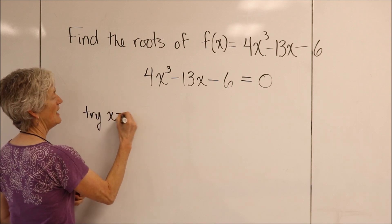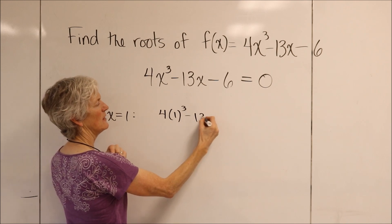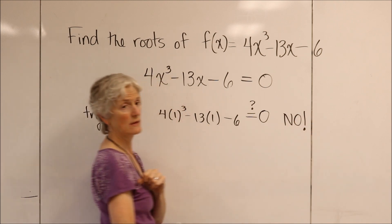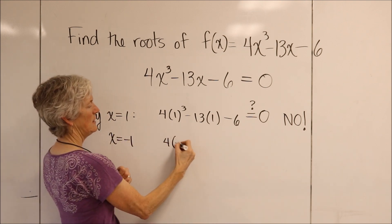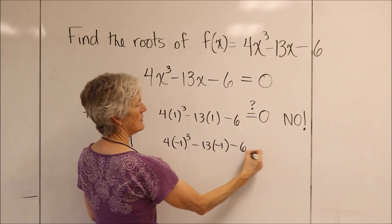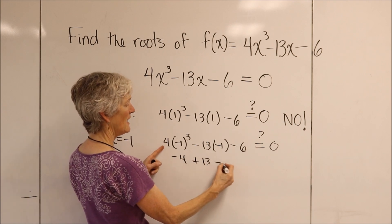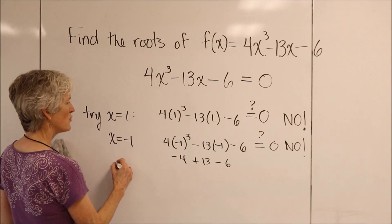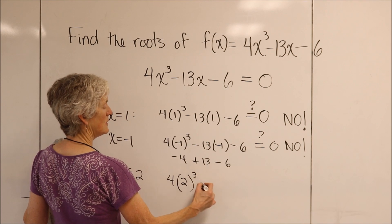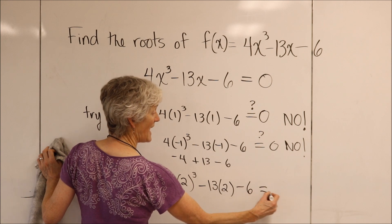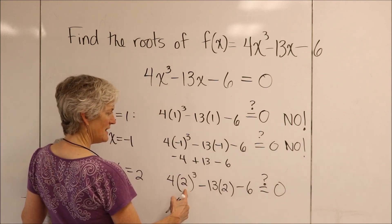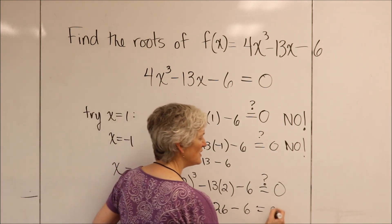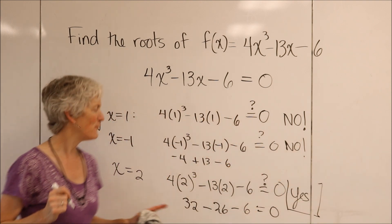Let's try x equals 1. I think you can quickly see this is not going to work — 4 minus 13? No, there's no way. How about negative 1? That's going to be negative 4 plus 13. So close, but no. Let's try x equals 2. So 4 times 2 cubed minus 13 times 2 minus 6. Does that equal 0? Let's see: 32 minus 26 minus 6. 32 minus 26 is 6, minus 6 is 0. Yes! We have found a root.